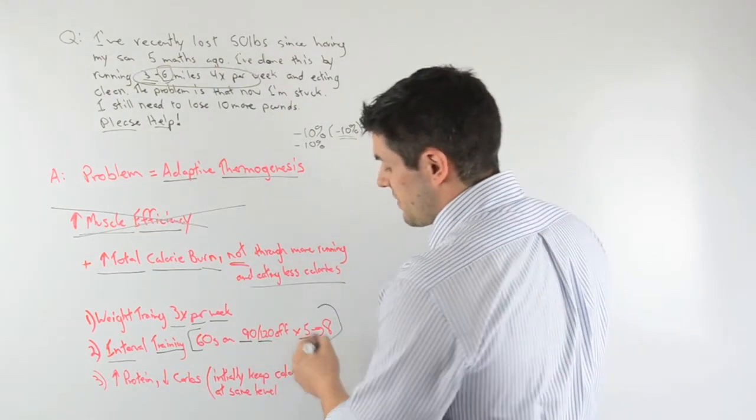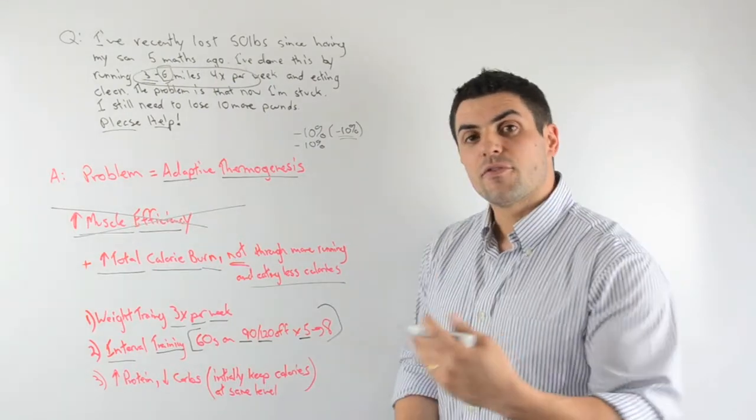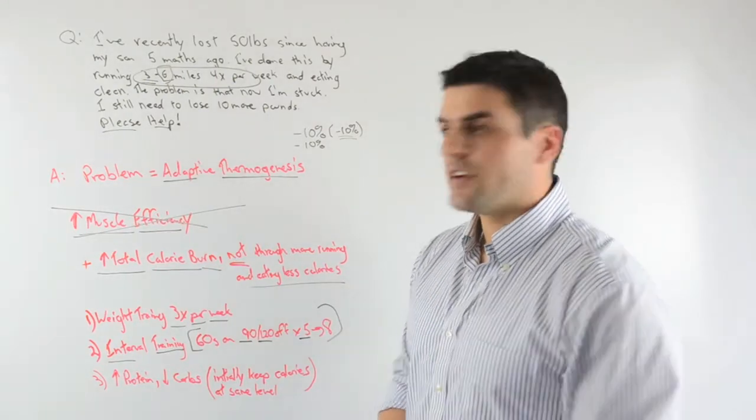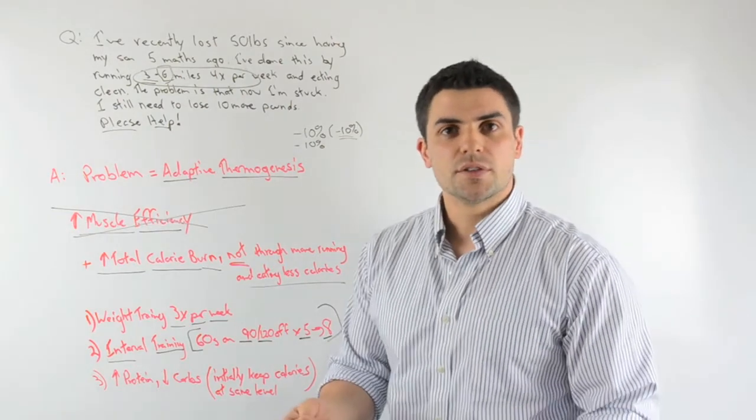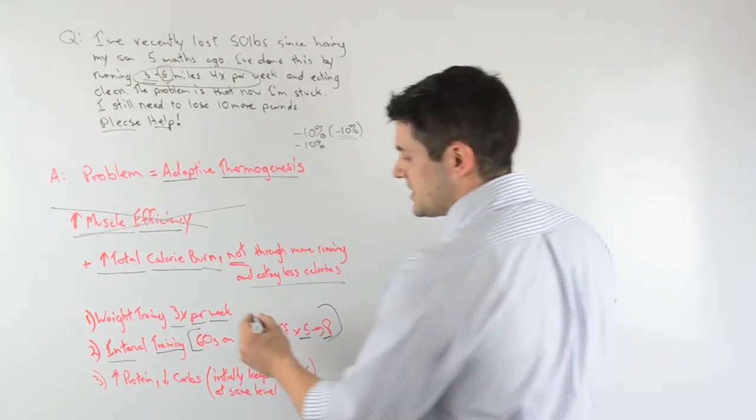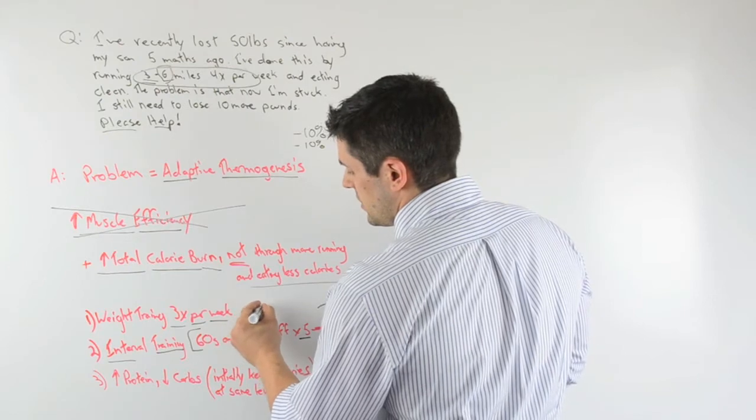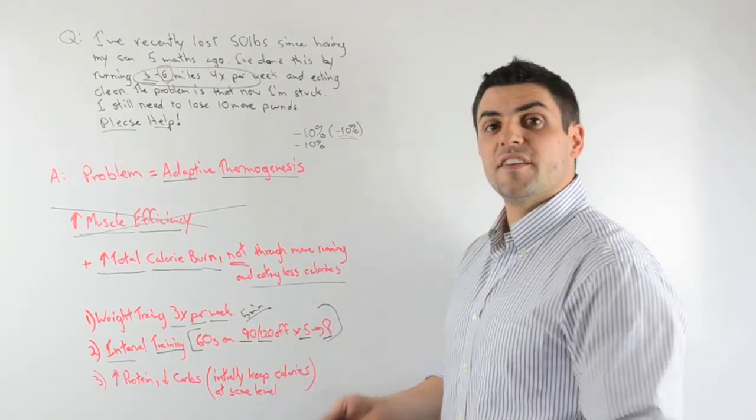You want to do this, you want to do say five rounds of that, and then every week increase the number of intervals you do by one. So at the end of four weeks, you're doing eight intervals. And you want to bookend this by a five-minute warm-up and a five-minute cool-down.